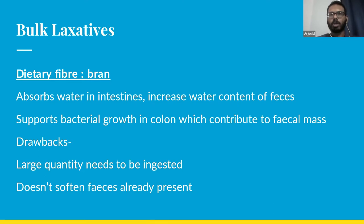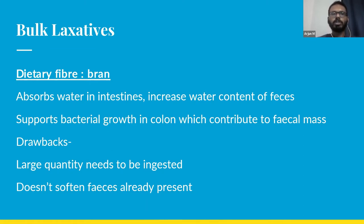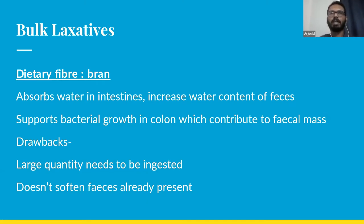The first group is bulk laxatives. Dietary fibers like bran are products of the cell wall that are not digested in the body. Their mechanism of action is that they absorb water in the intestine, increasing the water content of fecal material. They also support bacterial growth in the colon, contributing to fecal mass. The major drawback is that a large quantity needs to be ingested, and dietary fiber does not soften fecal material already present. It only softens material being formed, so dietary fiber can be prescribed as a prevention method, not for active management of constipation.